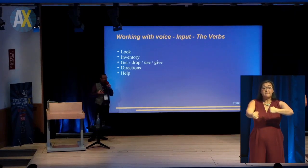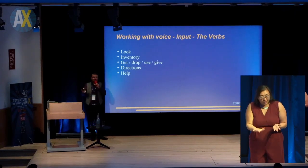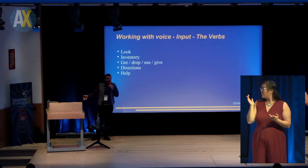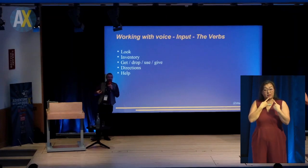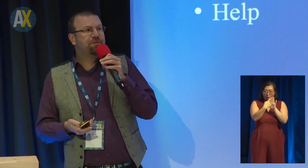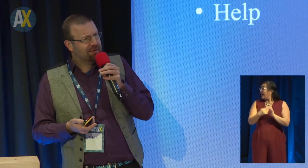The game is fairly simple. These are pretty much every verb in the system: look, inventory, get, drop, use, give. The directions are a clock face, so I've got the numbers 1 to 12. And the help system, which is very, very useful with voice because you've got no instruction sheet. If you want to say what do I do next in the game, there's nothing on screen that might suggest the word get would be a good thing to say here. So you've got to give them audio clues: try saying this.